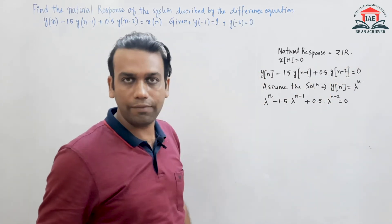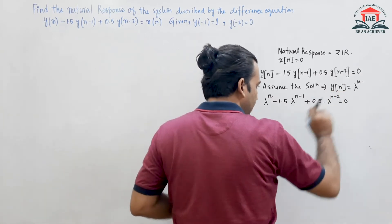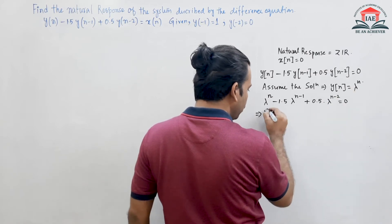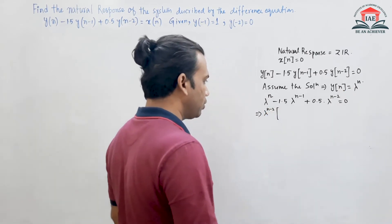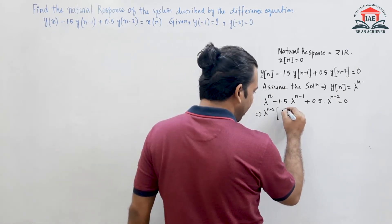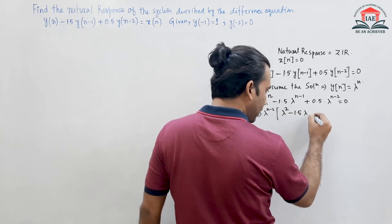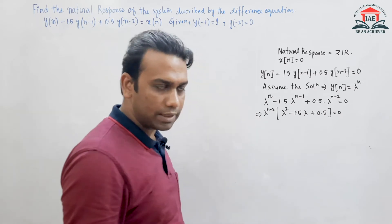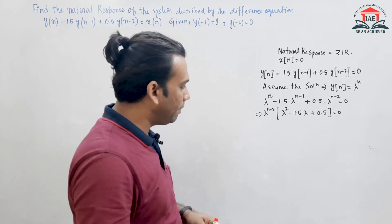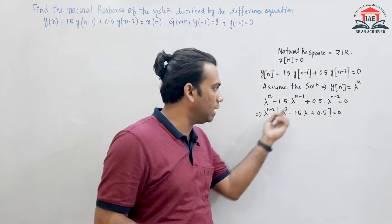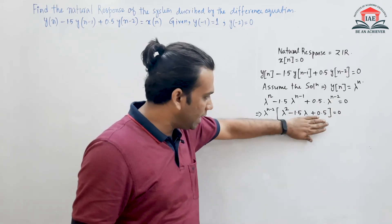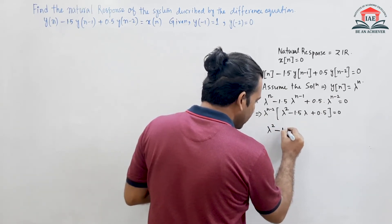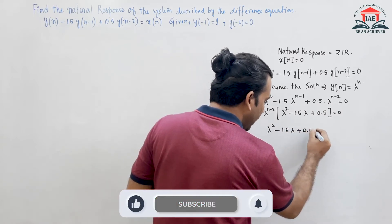After taking λⁿ⁻² common, we note that λⁿ⁻² can never be zero because λⁿ is our solution. So we set the bracketed term to zero, giving the characteristic equation: λ² - 1.5λ + 0.5 = 0.